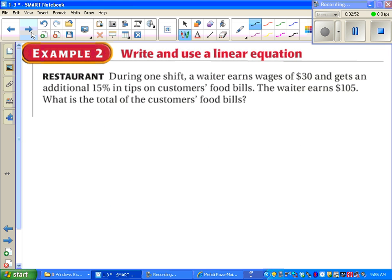We're going to write and use a linear equation. During one shift a waiter earns wages of thirty dollars, not thirty dollars an hour. Thirty dollars. And gets an additional fifteen percent in tips on customers' food bills. Right now I think students should talk about fifteen percent really being .15. That's how you convert a decimal to a percent or vice versa. You just move the decimal two places.